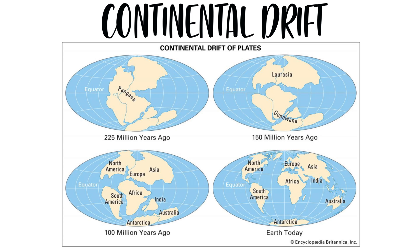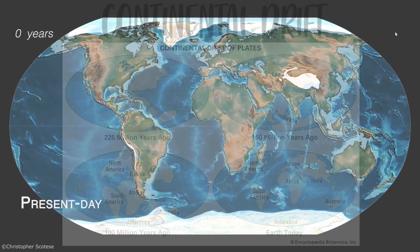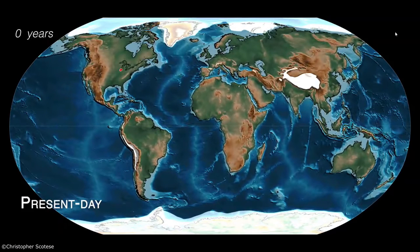Continental Drift explains how the continents have been shifting throughout different geological eras. The world we know today looks a certain way, but almost 200 million years ago, it looked very, very different.